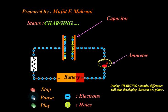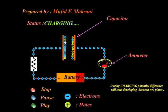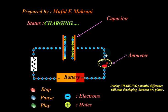The capacitor is getting charged. That means electrons are depositing on this plate, replacing the holes, and electrons from the other plate will flow through this path.